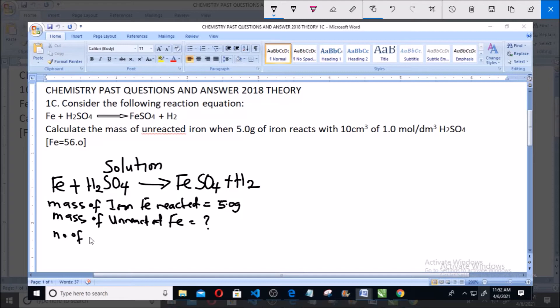Number of moles of H2SO4 is equals to mass concentration multiplied by volume. And the mass concentration is 1.0 mol per dm cube multiplied by 0.01, which is equals to 0.01 mole.